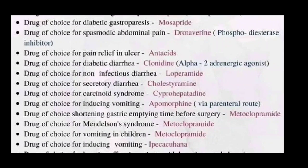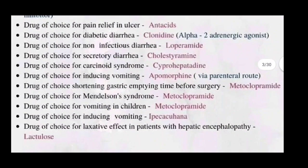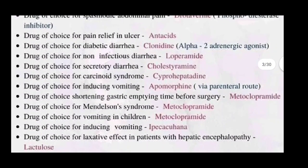Drugs of choice for secretory diarrhea is cholestyramine. Drugs of choice for carcinoid syndrome is cyproheptadine. Drugs of choice for inducing vomiting is apomorphine via the parenteral route. Drugs of choice for shortening gastric emptying time before surgery is metoclopramide.